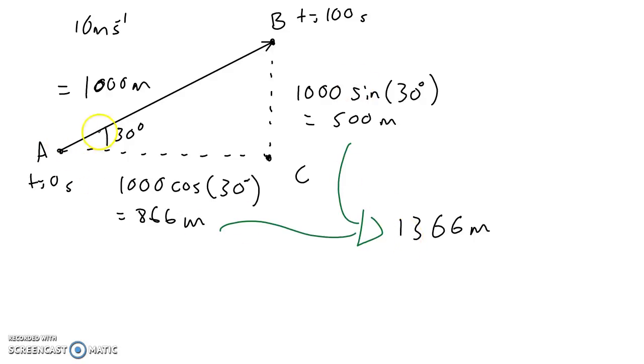So the balloon travels 1,000 meters. The scientists have to travel 1,366 meters, and they both have to do this in the same time. We established that the balloon is going to take 100 seconds to do this. That means the scientists have to travel 1,366 meters in 100 seconds.